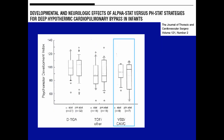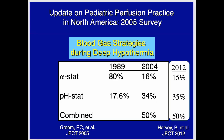There's not an overwhelming amount of data clearly showing one strategy is better. However, survey data from Bob Groom shows a dramatic shift in practice: in the late 1980s, almost everybody in pediatrics used alpha stat for deep hypothermic circulatory arrest, with only about 18% using pH stat. By 2004, only 16% used alpha stat, and by 2012, only 15% — reflecting a major shift toward pH stat. There was also a notable 50% figure representing those combining both strategies.